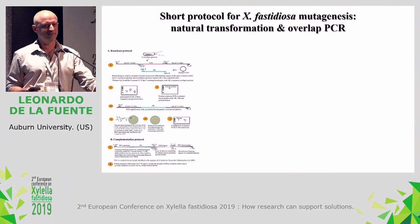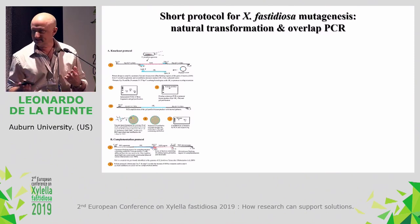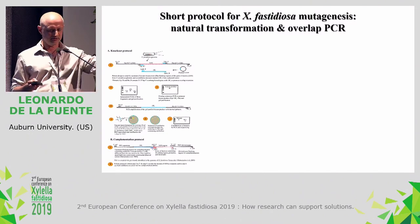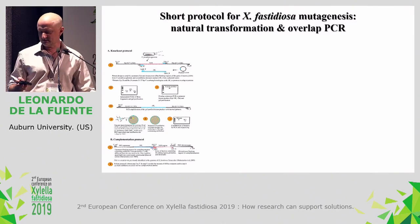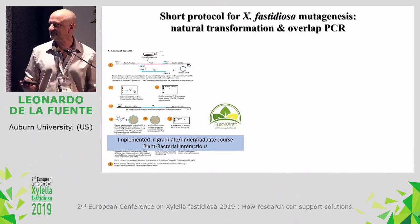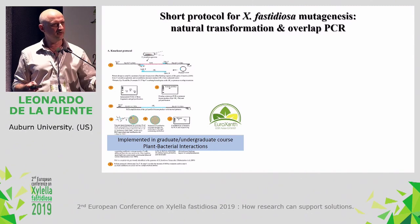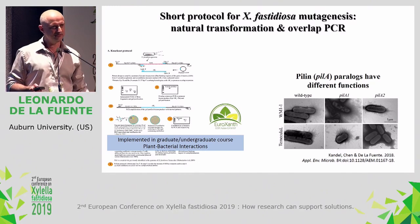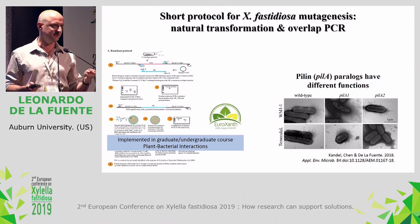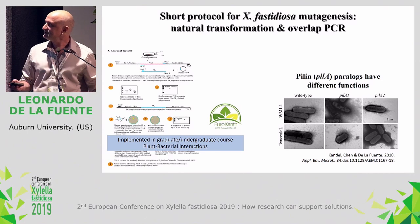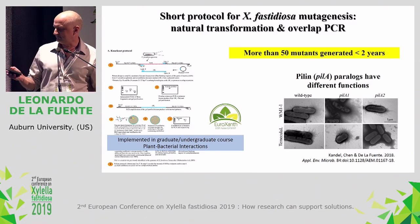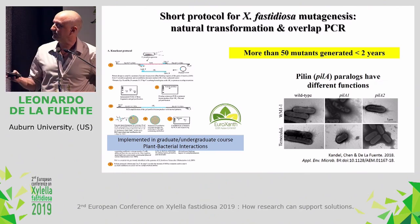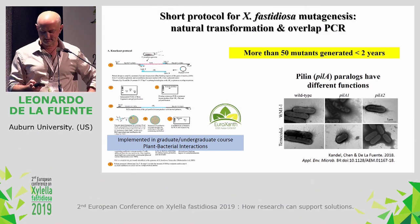During this process we developed a protocol for mutagenesis using natural transformation and overlap PCR, published for fastidiosa multiplex strains. In pauca it doesn't seem to work as well, but in fastidiosa it worked very well — I even implemented this in graduate courses where all groups were able to create mutants. Thanks to COST Action EuroXanth, we received multiple visitors in the lab, all trained on this technique. We were able to create mutants in the different paralogs of pilA1 and pilA2 to study function, and in less than two years we have generated more than 50 mutants in Xylella fastidiosa in my lab.